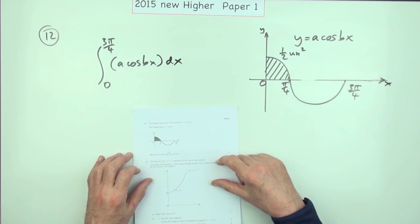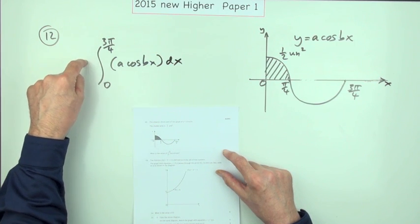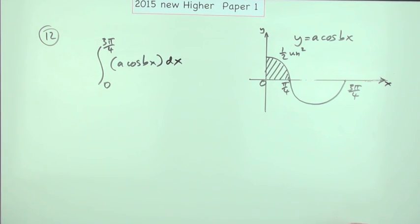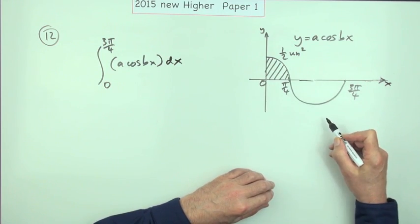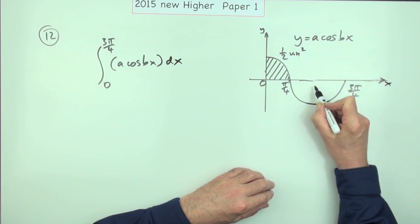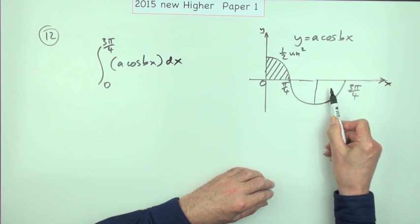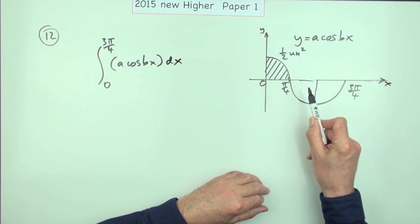And this is a key word: what's the value of this? Well, one feature of the sinusoidal waveforms of the sines and cosines are each of the quarter parts are symmetrical. Each of those parts are simply the same template as each other. So if that's half a square unit, so is that and so is that.